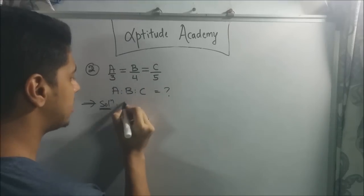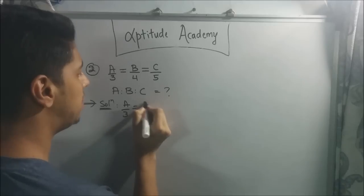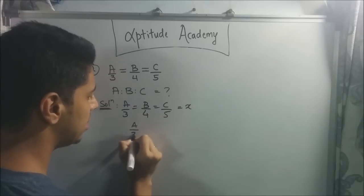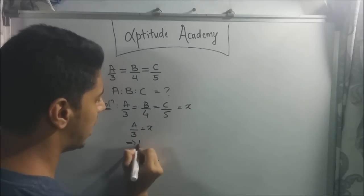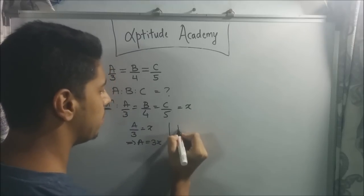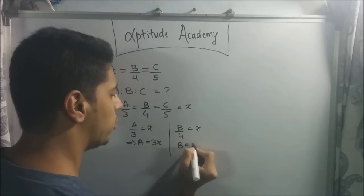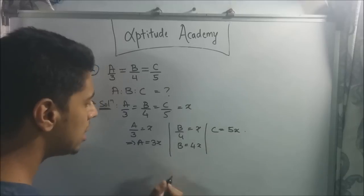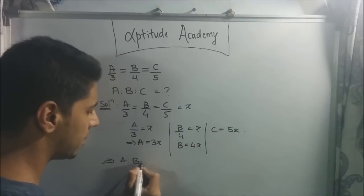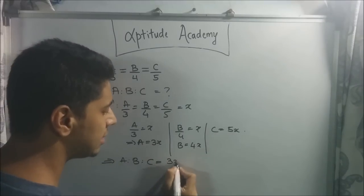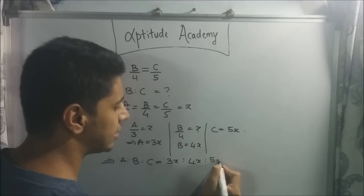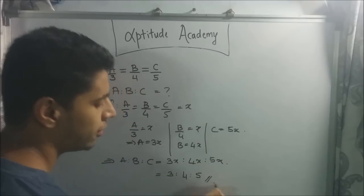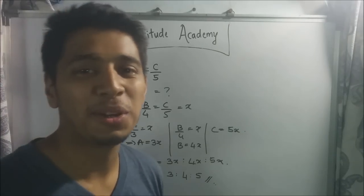Let's equate this to some x. So a by 3 equals b by 4 equals c by 5 equals some x. Now a by 3 equals x implies a equals 3x. B by 4 equals x, so b equals 4x. C equals 5x. So now we have to write a:b:c, that will be 3x:4x:5x, which is in fact 3:4:5. These problems are seeming super simple, isn't it?